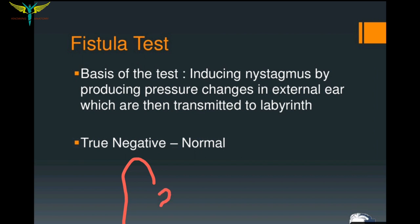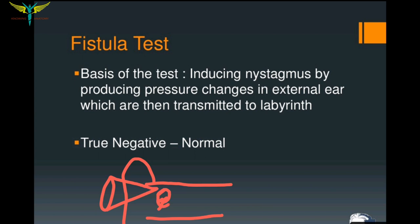This test is performed by applying pressure on the tragus of the ear. A Seigel's speculum is inserted into the external ear. Either way — pressing the tragus or using the Seigel's speculum — we can perform the fistula test.